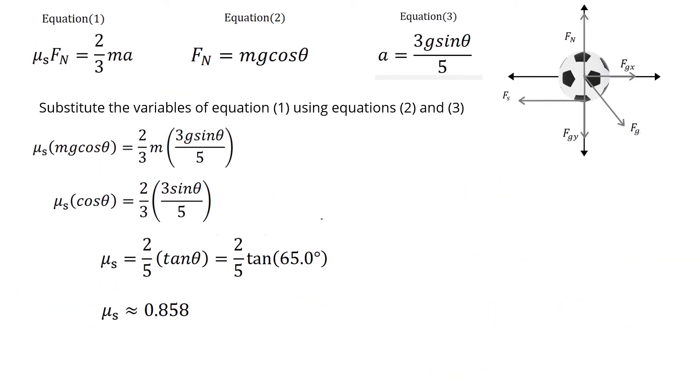The same process applies where equations two and three are plugged into equation one. We arrive at this, and this still cancels out. Dividing both sides by cosine, we arrive at tangent. With this, we can conclude that the minimum coefficient of static friction of a solid sphere is not sufficient for a hollow sphere in that it cannot prevent it from slipping.